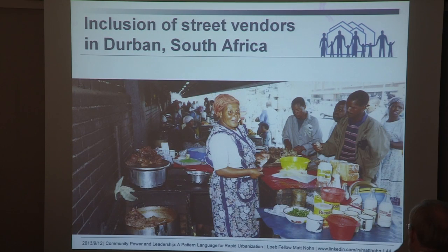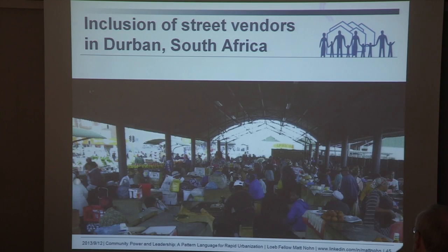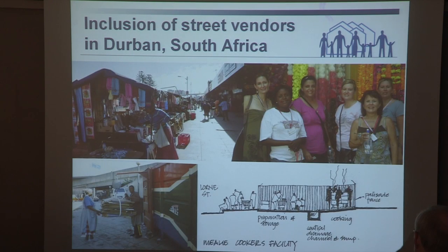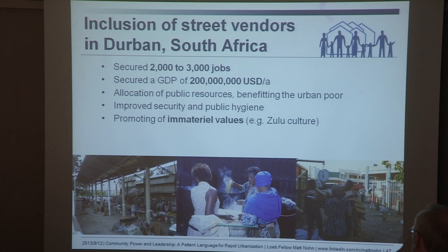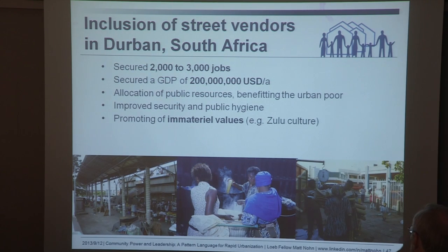Where the main transportation hubs are, that's where the street vendors are. This is a project in Germany I had the pleasure of evaluating for the Gates Foundation. They secured the market for informal street vendors, which serves about half a million people every day, securing two to three thousand jobs and an annual GDP contribution of 200 million in purchasing power parity. It largely improved public space through allocation of public resources, benefiting the urban poor, improving public hygiene, security, and providing multiple civic values by preserving the market.